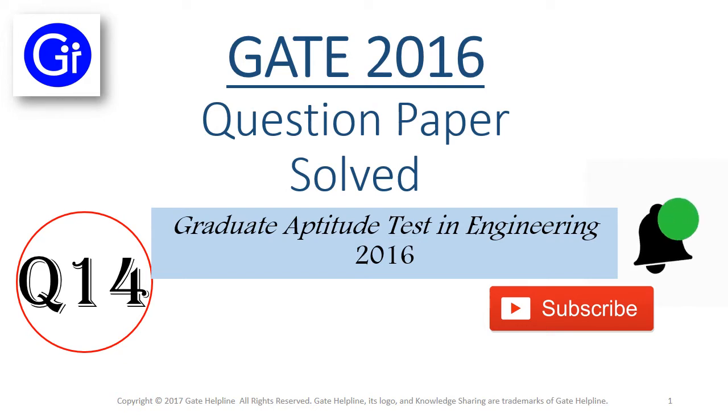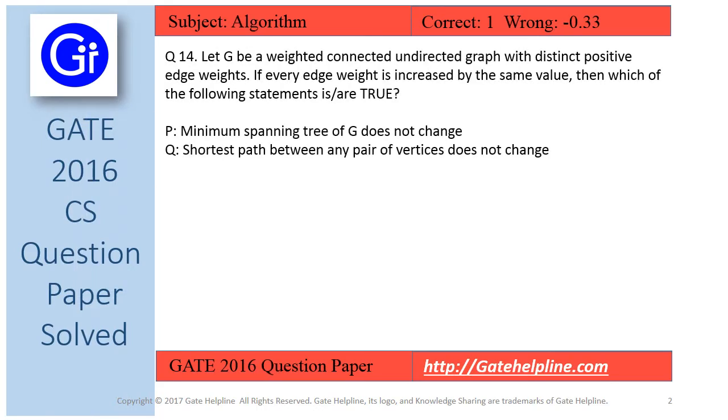So let's start question number 14. Question number 14 is: let G be a weighted connected undirected graph with distinct positive edge weights. If every edge weight is increased by the same value, then which of the following statements is or are true?